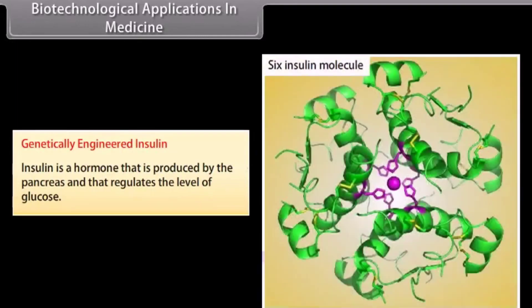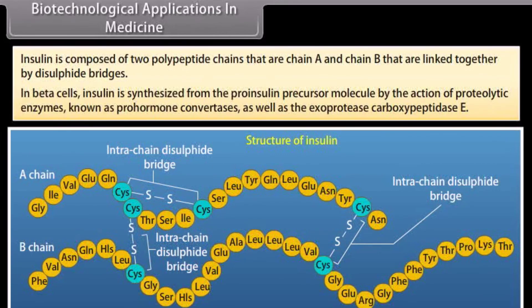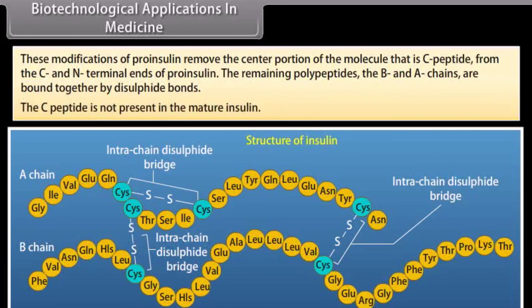Biotechnological applications in medicine. Genetically engineered insulin. Insulin is a hormone produced by the pancreas that regulates the level of glucose. Insulin is composed of two polypeptide chains, chain A and chain B, linked together by disulfide bridges. In beta cells, insulin is synthesized from the pro-insulin precursor molecule by proteolytic enzymes known as pro-hormone convertases and exoprotease carboxy peptidase E. These modifications remove the C peptide from the C and N terminal ends of pro-insulin, leaving the B and A chains bound by disulfide bonds.